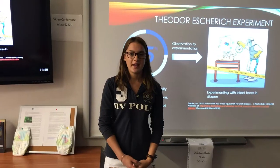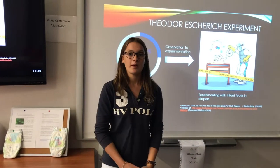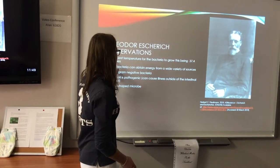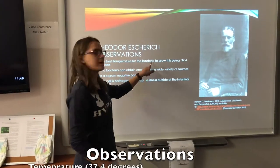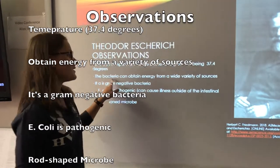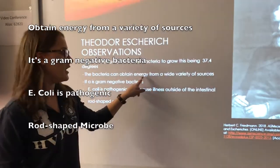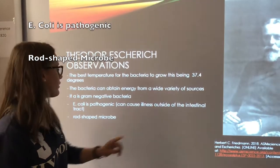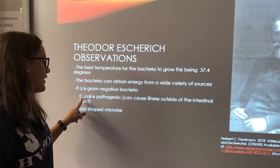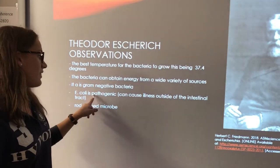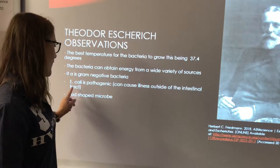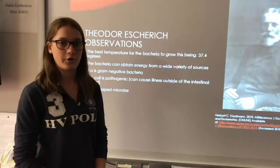He experimented with his patients' faeces. He studied it carefully under a light microscope where he found different properties of the bacteria. These include the best temperature for the bacteria to grow, this being 37.4 degrees. The bacteria can obtain energy from a wide variety of sources. It is a gram-negative bacteria. E. coli is pathogenic and can cause illness outside the intestinal tract. It is a rod-shaped microbe.